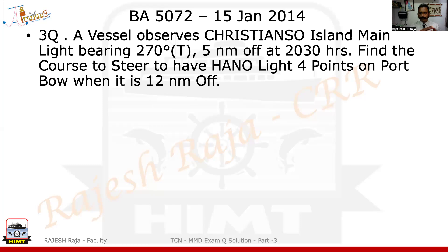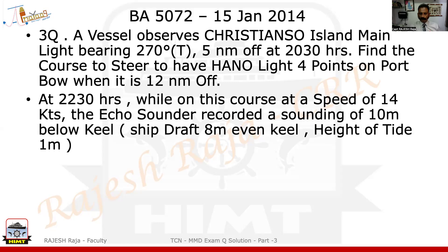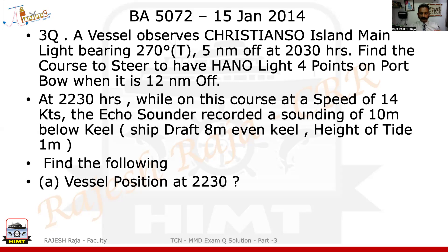It says a vessel observes Christianso Island main light bearing 270, 5 nautical miles off at 2030. Find the course to steer to have Hano light 4 points on the port bow when it is 12 nautical miles off. At 2230, that is two hours later while on this course at a speed of 14 knots, the echo sounder recorded a sounding of 10 meters below the keel. The ship's draft and height of tide are given. Find the vessel's position at 2230 and the set and rate of the current.